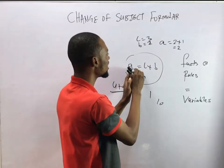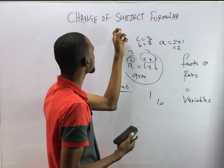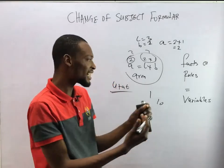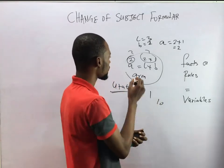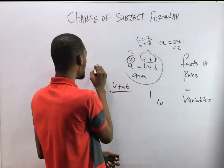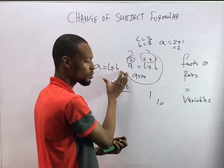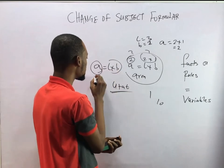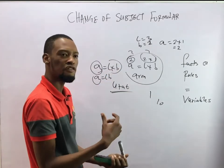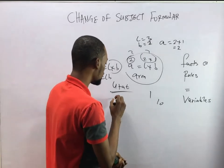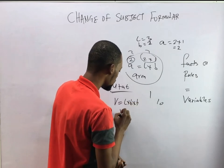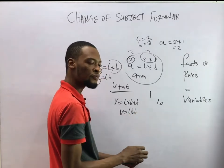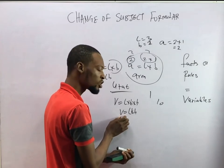The difference between an equation and an expression is the equality sign — once you have an equality sign, it is an equation. Now, what is subject formula? Subject formula is a single variable, usually on the left, that every other thing is equal to. For example, Area equals L times B — area is a single variable and equals everything on the right, so A is the subject formula. Similarly, volume V equals L times B times H, so V is the subject formula.